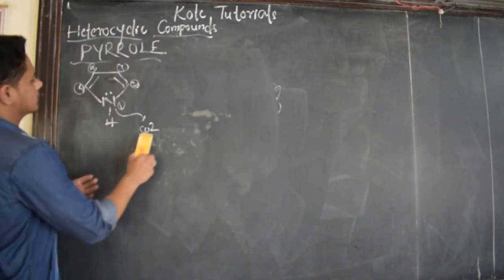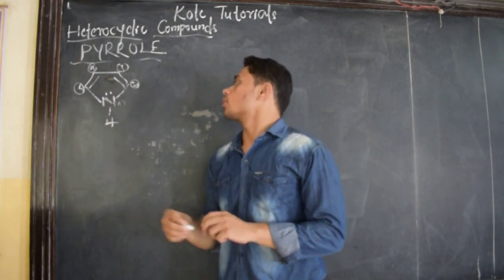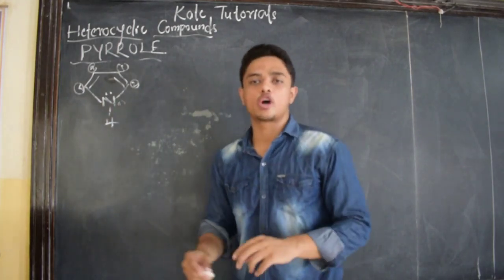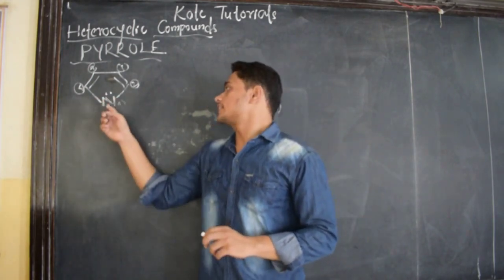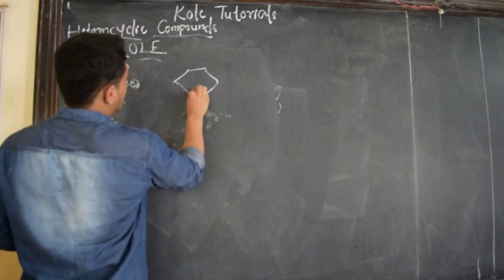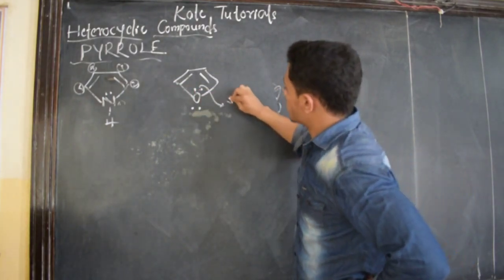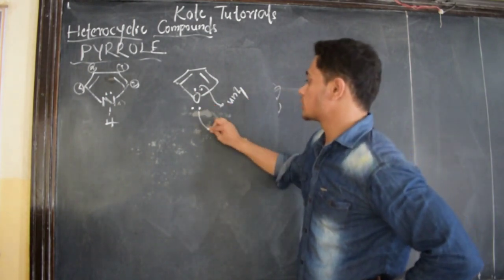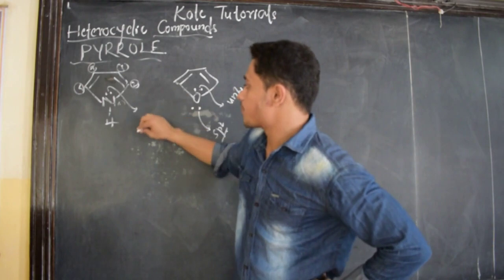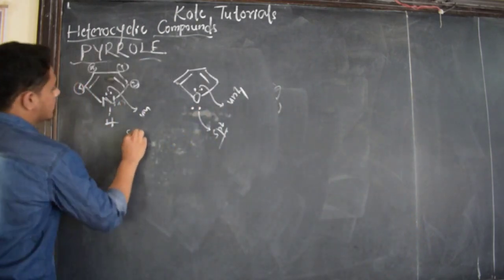In exams, you may be asked: the lone pair electrons present in Pyrrole — in which orbital are they present? The options are sp3, sp2, sp, or unhybridized p orbital. The answer is unhybridized p orbital, because those pi electrons remain in the unhybridized p orbital. Similarly for furan, the lone pair participating in aromaticity is in the unhybridized p orbital of oxygen, while the other lone pair of oxygen is in the sp2 hybridized orbital. For nitrogen in Pyrrole, the lone pair is in the unhybridized orbital, while the bonds with hydrogen or carbon are sp2 hybridized.